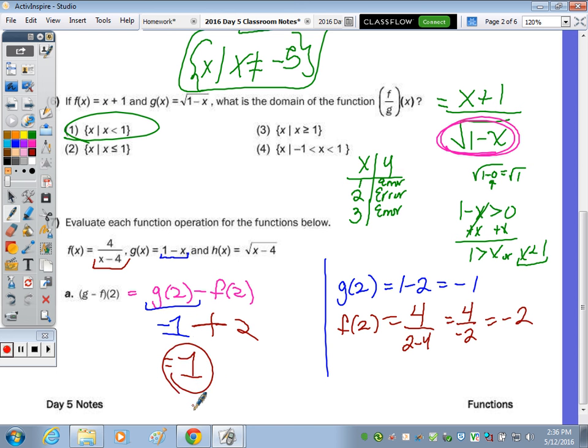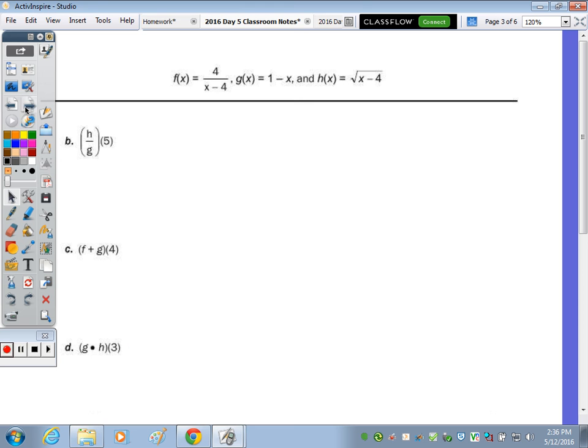That says part A, but I copied the functions at the top of the next page. So now we're going to take H of 5 and divide it by G of 5. So go ahead and plug the 5 into the H function and G function. So this means H of 5 divided by G of 5. This means F of 4 plus G of 4. And this is G of 3 times H of 3.